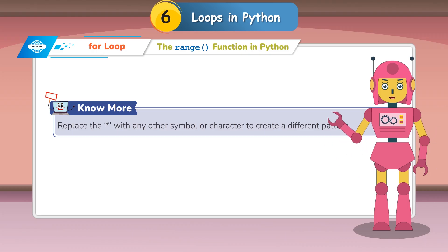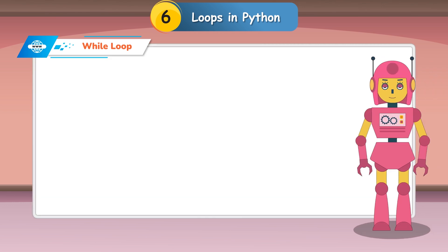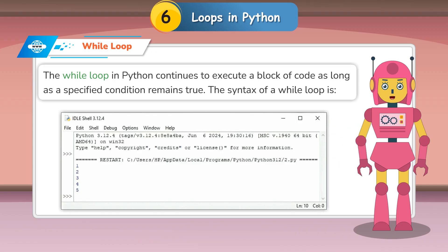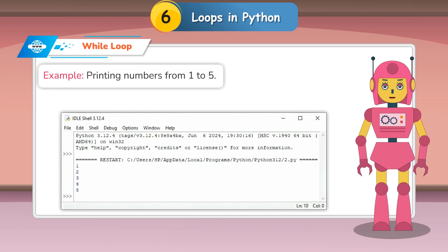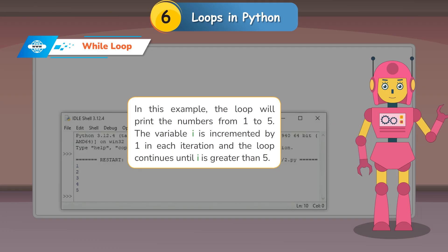You can replace the asterisk with any other symbol or character to create a different pattern. The while loop in Python continues to execute a block of code as long as a specified condition remains true. Example — printing numbers from 1 to 5: the loop will print the numbers from 1 to 5. The variable i is incremented by 1 in each iteration and the loop continues until i is greater than 5.